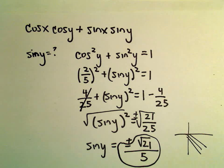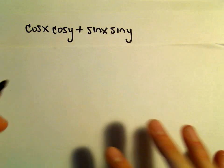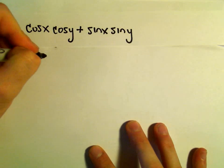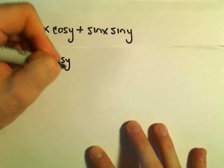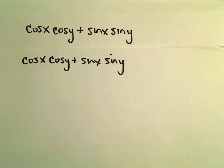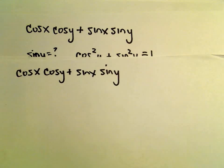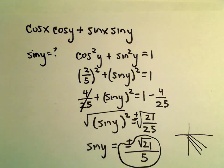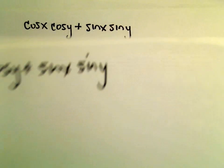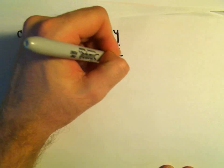Now we know our value for sine y. We've got cosine x, cosine y, plus sine x times sine y. We know our value for sine y—we said we would have to use the negative square root of 21 over 5. So there we've got negative square root of 21 over 5.